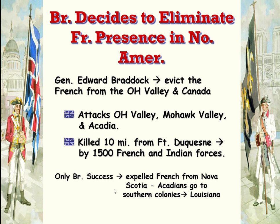Their success was that they were able to get rid of some French in parts of Canada — up in Nova Scotia. These people, called the Acadians, are forced to relocate to the southern colonies and actually go to Louisiana. These people are actually what we would refer to as Cajun people, who are still in Louisiana today. So if you have people from Louisiana who have been there for generations, they're probably transplants from French Canada during the French and Indian War. Some success, but mostly failure.